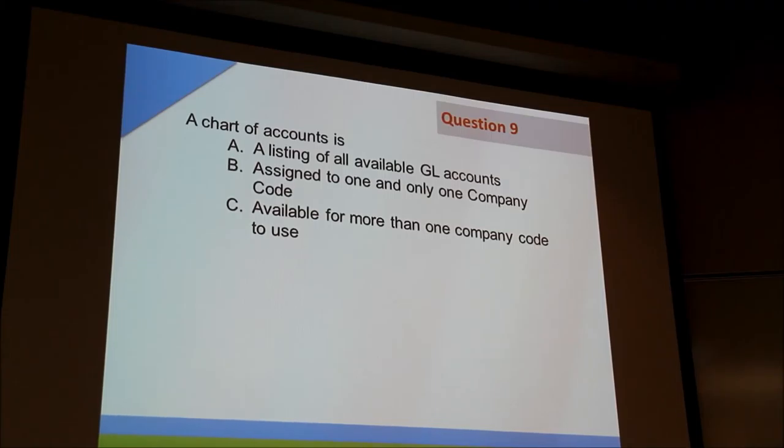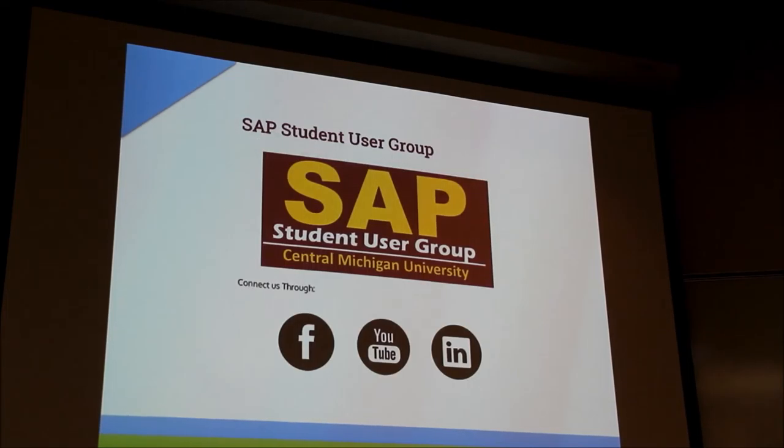All right. A chart of accounts is A, a listing of all available GL accounts, B, assigned to one and only one company code, and C, available for more than one company code to use. There's more than one answer. We've got A and C over here. And A and C it is.